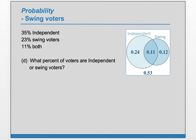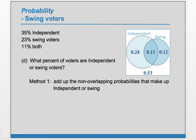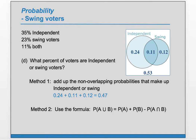Part D: what percent of voters are independent or swing voters? Since 'or' is inclusive, anything in either circle counts. Method one: add the non-overlapping probabilities — 0.24 plus 0.11 plus 0.12 — which gives 0.47. Alternatively, use the formula P(A or B) = P(A) + P(B) − P(A and B): 0.35 plus 0.23 minus 0.11, which also gives 0.47.